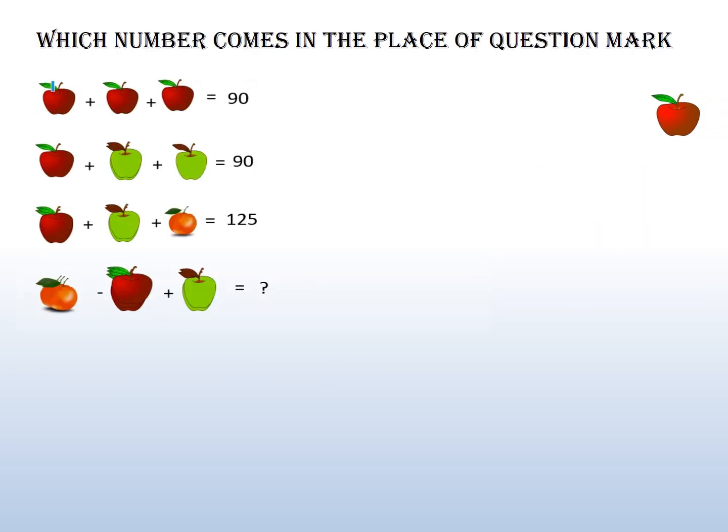In the first line, there are 3 red apples, so 3 times 30 equals 90. So 1 red apple is 30.